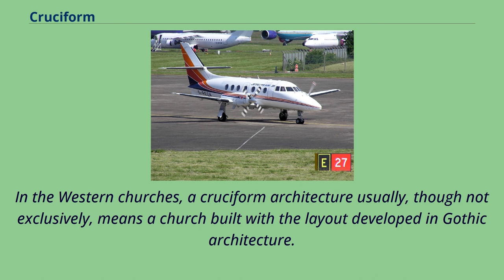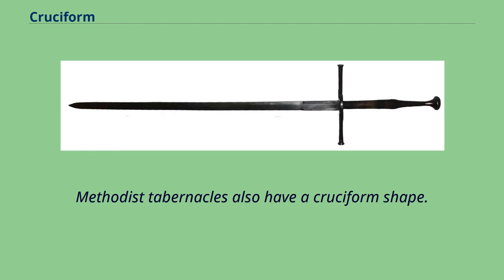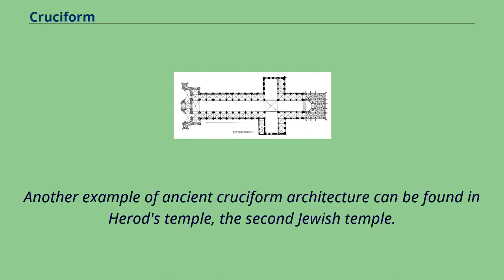In the Western churches, a cruciform architecture usually, though not exclusively, means a church built with the layout developed in Gothic architecture. In churches that are not oriented with the altar at the geographical east end, it is usual to refer to the altar end as liturgical east. Methodist tabernacles also have a cruciform shape. Another example of ancient cruciform architecture can be found in Herod's Temple, the second Jewish temple.